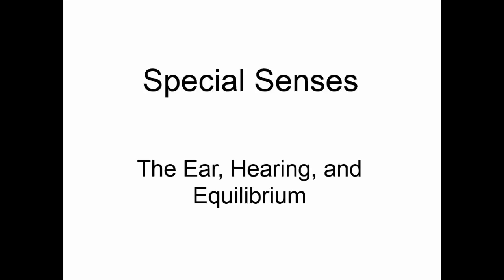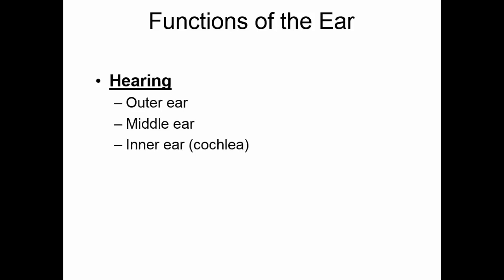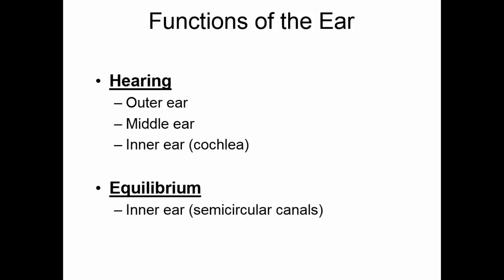The ear houses the special senses of hearing and equilibrium. These senses rely on mechanoreceptors. The part of the ear involved in hearing is the outer ear, the middle ear, and the cochlea of the inner ear. Equilibrium is a function of the semicircular canals and the vestibule, both of which are located in the inner ear.